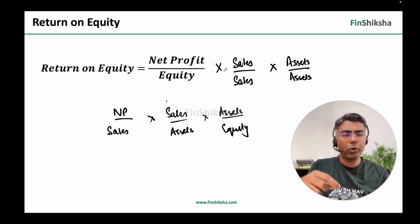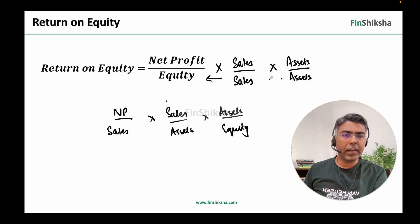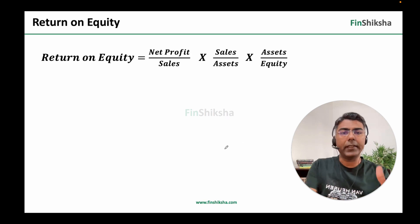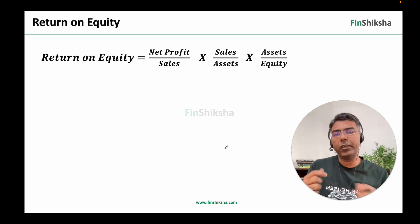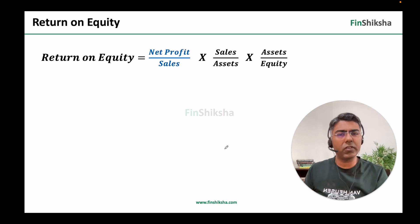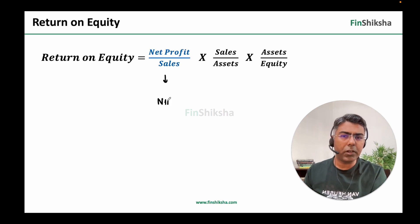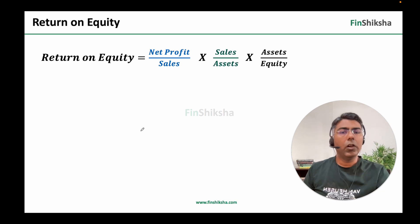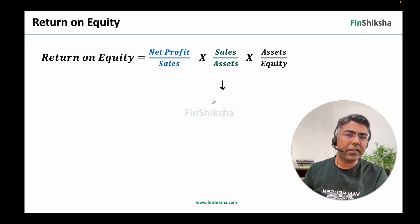We first multiplied by sales upon sales and assets upon assets — that we can do mathematically. Then we just rearrange: sales goes here, assets goes here, equity goes here. So basically we just rearrange these items and the equation looks like: net profit upon sales, into sales upon assets, into assets upon equity. Now, net profit upon sales is nothing but the net profit margin of the company — how much profit margin the company has.